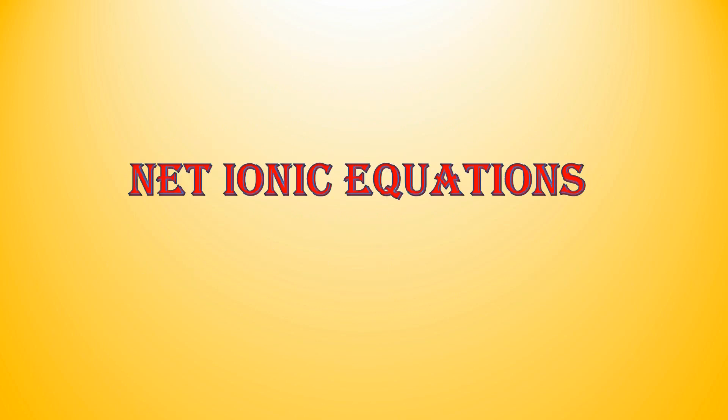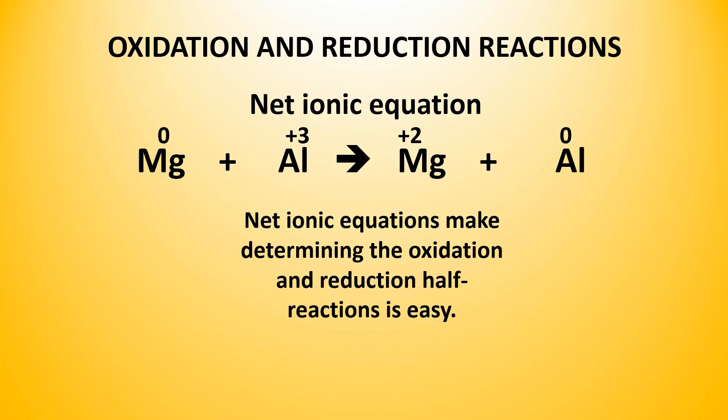Net ionic equations. After determining the net ionic equation for the reaction where Mg 0 reacts with Al plus 3 to produce Mg plus 2 and Al 0, determining the oxidation and reduction half reactions is quite easy.